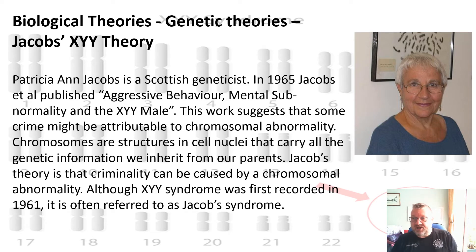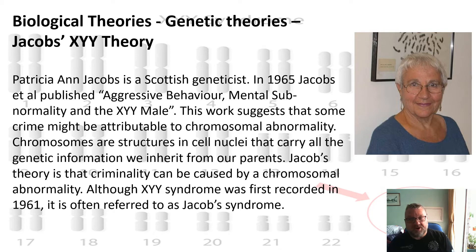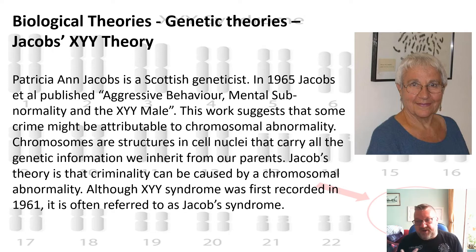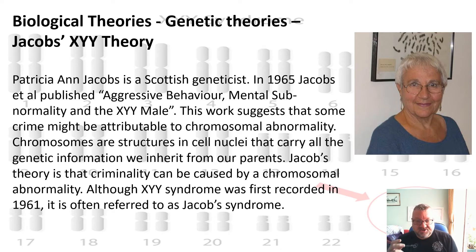Let's look at Jacobs's XYY theory, starting with a brief introduction. Patricia Ann Jacobs is a Scottish geneticist, and in 1965 Jacobs et al. published the work 'Aggressive Behaviour, Mental Subnormality and the XYY Male.' This work suggested that some crime might be attributable to chromosomal abnormality. Chromosomes are structures of the cell nuclei that carry all the genetic information we inherit from our parents. Jacobs's theory is that criminality can be caused by a chromosomal abnormality. Although the syndrome was first recorded in 1961, Jacobs's work was the seminal work, and so XYY syndrome is often referred to as Jacobs's syndrome.